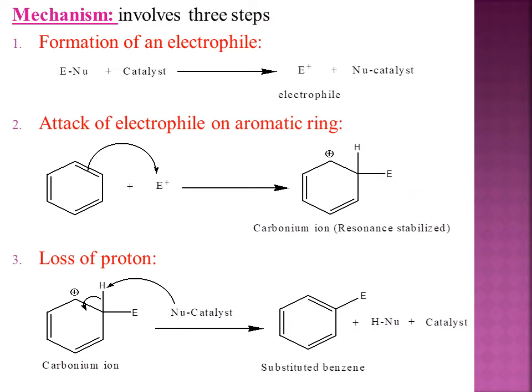The mechanism of electrophilic aromatic substitution reactions involves three steps. The first step is formation of electrophile, the next one is attack of electrophile on the aromatic ring, and the third one is loss of proton. These steps are common in all electrophilic aromatic substitution reactions.